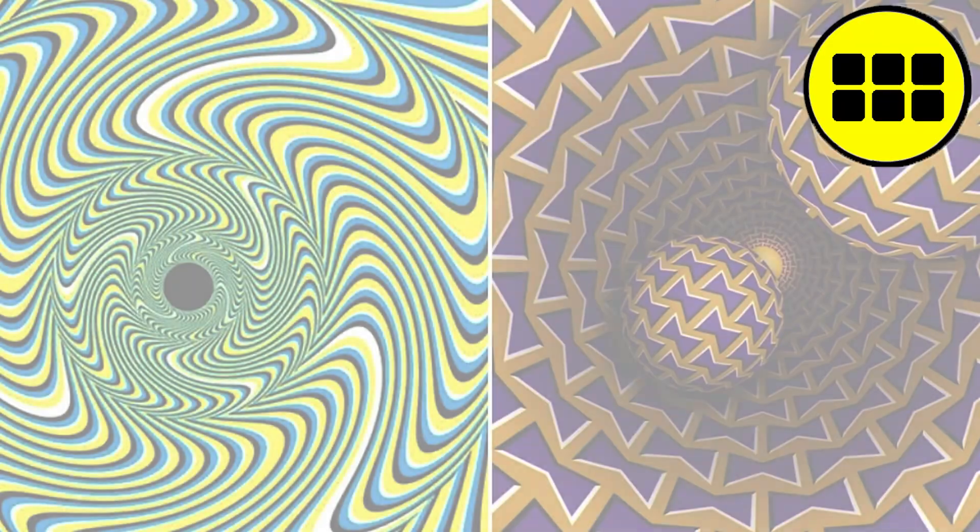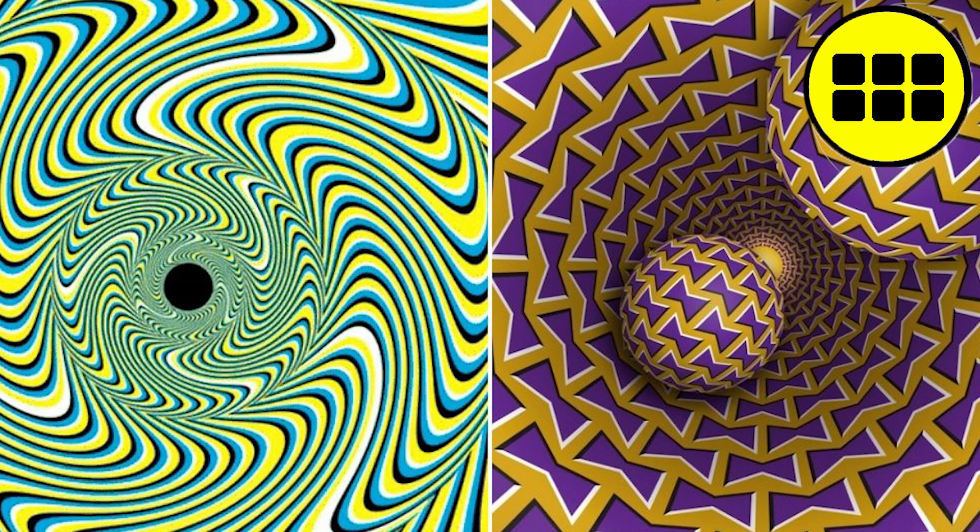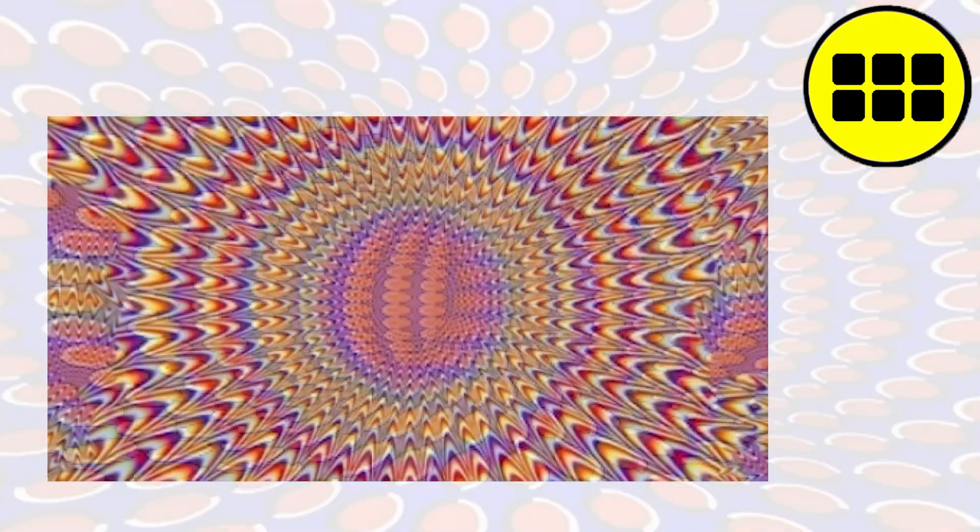Hermann grid. The Hermann-Rüttel illusion, more commonly known as the Hermann illusion, is a visual illusion that was first described by German psychologists Ludwig Hermann and Ernst Rüthel in 1870.